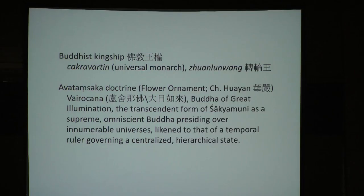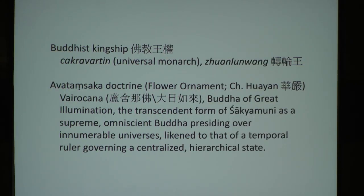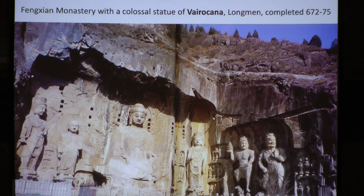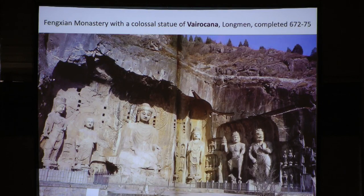The gradual ascendance of Buddhism in the seventh century provided the backdrop to Wu Zetian's founding of a Buddhist state. In addition to the notion of Buddhist kingship and the paradigm of the Chakravartin, the state Buddhism of China was also informed by the Avatamsaka, or Flower Ornament Buddhism—Huayan in Chinese. Based on the Flower Ornament Sutra, the doctrine's vision of an ordered cosmos with Vairocana—the Buddha of Great Illumination—as a supreme omniscient Buddha presiding over innumerable universes was likened to a temporal ruler governing a centralized hierarchical state. The Fengxian Monastery at Longmen, with its famous colossal statue of Vairocana, already gave expression to such an idea.